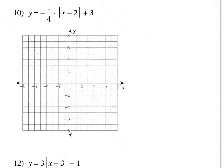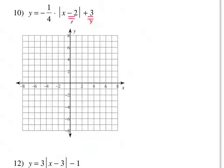Your vertex is always located at these two numbers. This is your x, this is your y variable. But remember, what's the little phrase we have to remember here? X is hexed, y is wise. So therefore, our vertex is located at positive 2, 3.